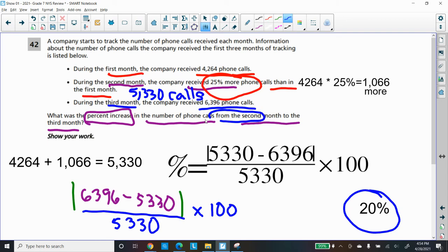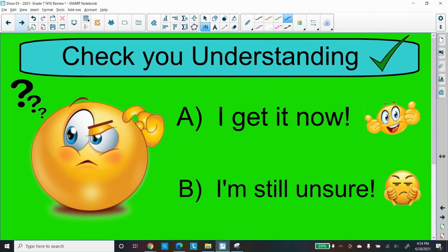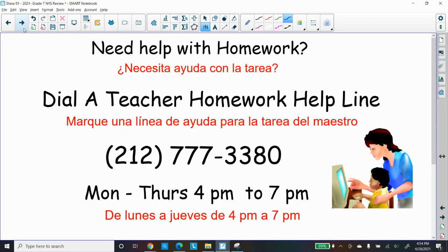If you took a little time and multiply 20% times 5,330 and added that amount to the 5,330, you will get 6,396 phone calls. Just a little sidebar to figure out how they got that. But that's not necessary. So our answer is going to be a 20% change in the number of phone calls from the second month to the third month. It went up by 20%. I hope you understood that one. That was a good question. I hope you understand what's going on. If you're not sure, rewatch the video and bring in your questions because it's a lot of stuff we got to do for the state test.